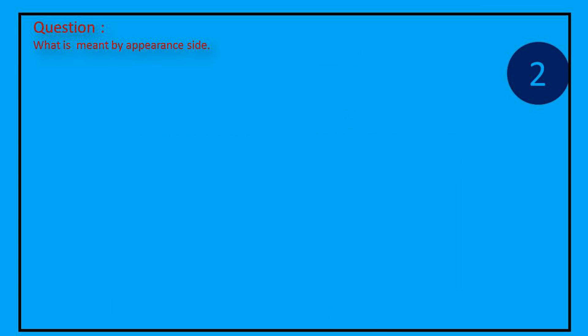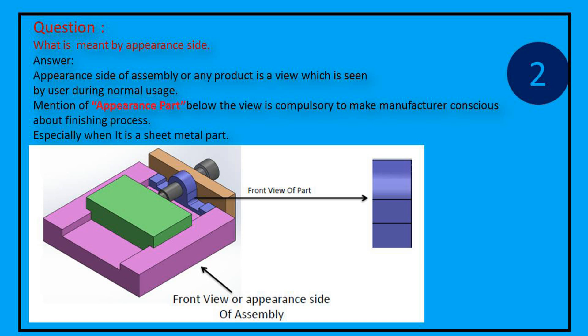Question: What is meant by appearance side? Answer: Appearance side of assembly or any product is a view which is seen by user during normal usage. Mention of appearance part below the view is compulsory to make manufacturer conscious about finishing process, especially when it is a sheet metal part.